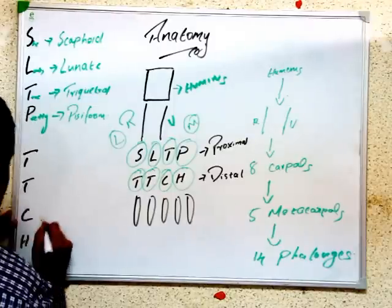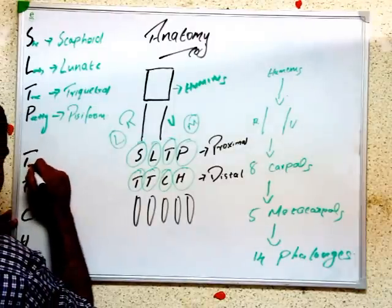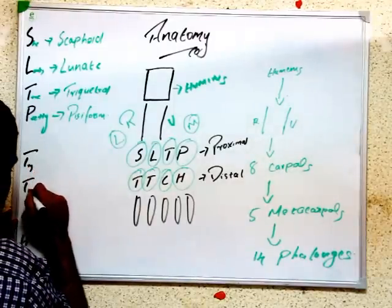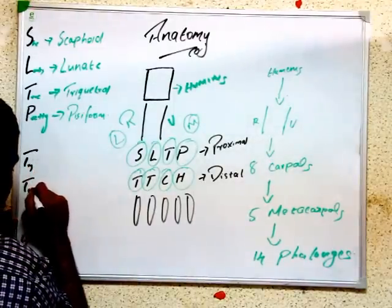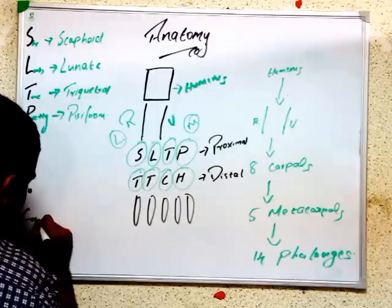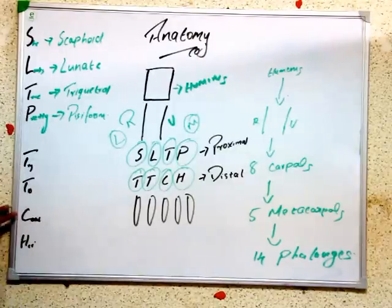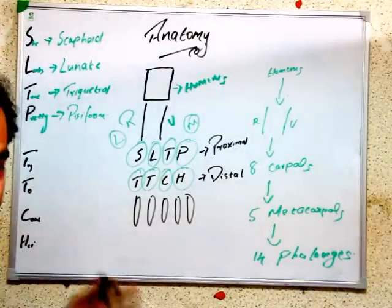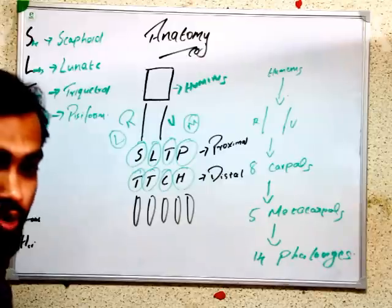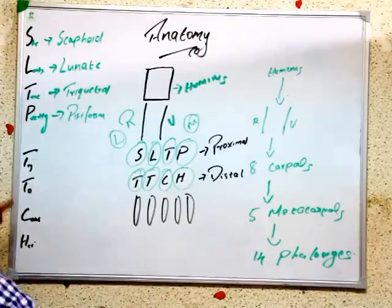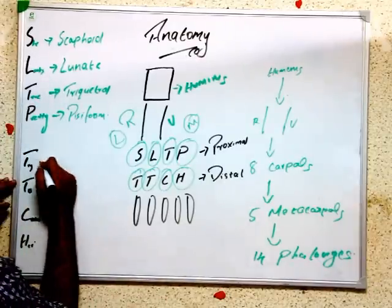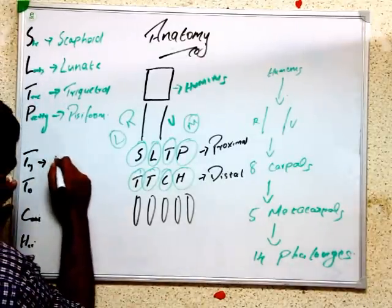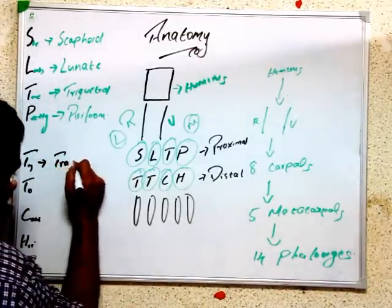Then the distal row mnemonic continues: 'Try To Catch Her.' This gives us Trapezium, Trapezoid, Capitate, and Hamate. So the full mnemonic is: 'She Looks True Pretty, Try To Catch Her' — covering all eight carpal bones from lateral to medial.